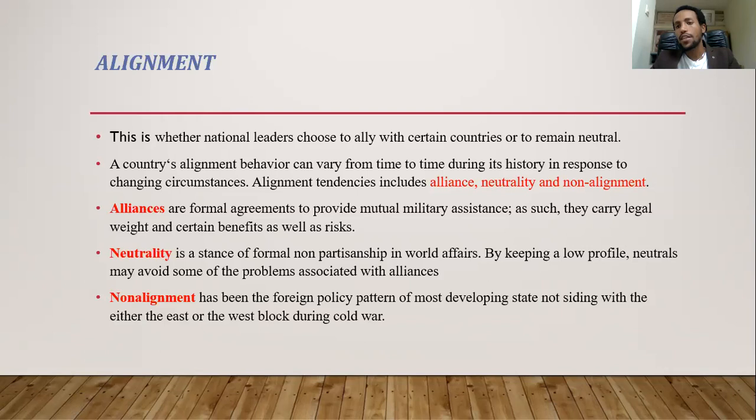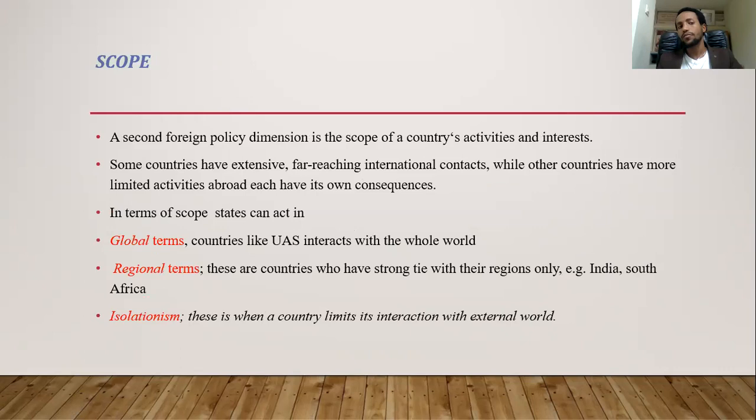So when we see alignment, countries might want to enter into a formal, written alliance. The other option is neutrality, meaning an unwritten, informal relationship with no formal written alliance. And the third is non-alignment, meaning not supporting any of the different blocs.